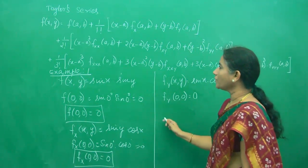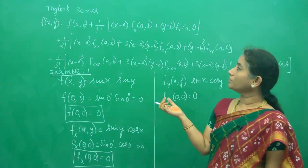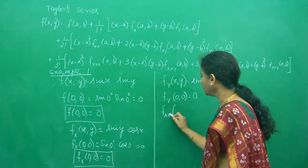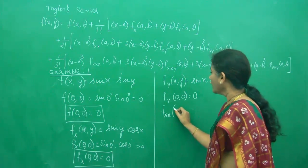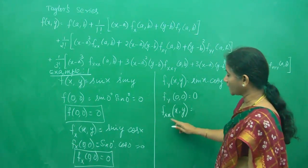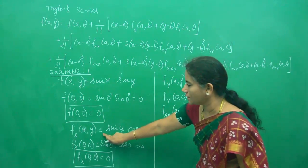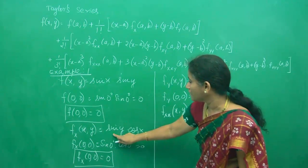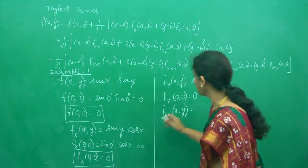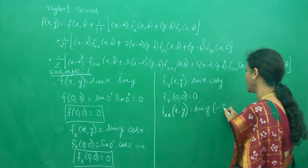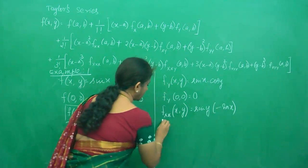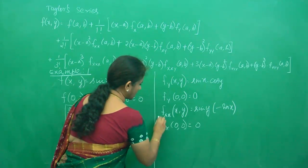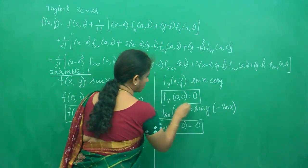Now let us do the second line. What is f_xx(a,b)? For f_xx(x,y), I differentiate f_x(x,y) = sin(y)·cos(x) once more with respect to x. sin(y) stays as constant, and the derivative of cos(x) is −sin(x). So f_xx(x,y) = −sin(y)·sin(x). Then f_xx(0,0) = −sin(0)·sin(0) = 0. Draw a rectangle and keep it.